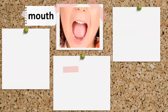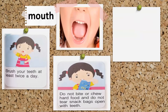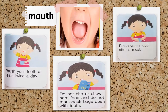How do we protect our mouth? First, brush your teeth at least twice a day, during the morning and evening. Do not bite or chew hard food, and do not tear snack bags open with your teeth, because you might damage your teeth. Rinse your mouth with clean water after a meal to prevent cavities or tooth decay.